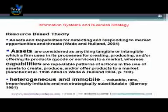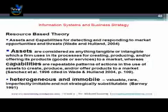In order for a resource to be imperfectly immutable, Barney states three factors. The first is unique historical conditions — that means that at a particular point in time in history, you were able to acquire a resource or create a functionality around it, but those unique historical conditions have since changed.